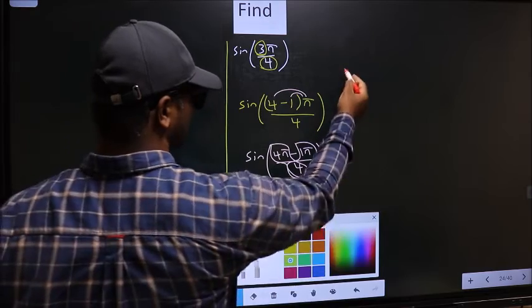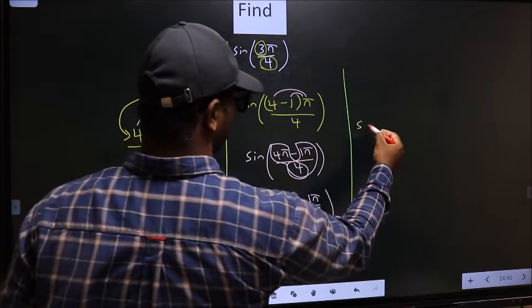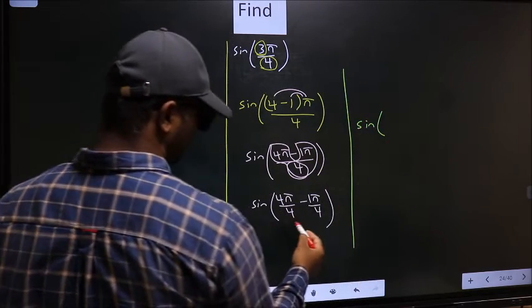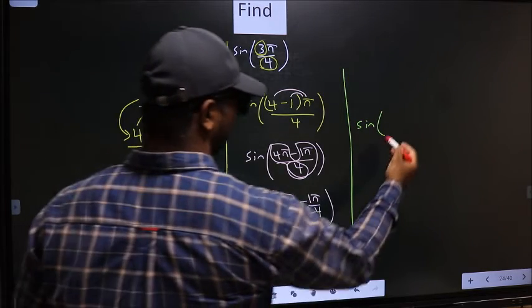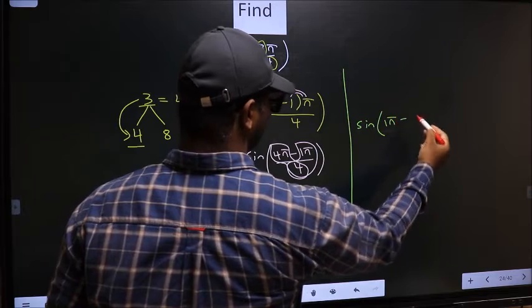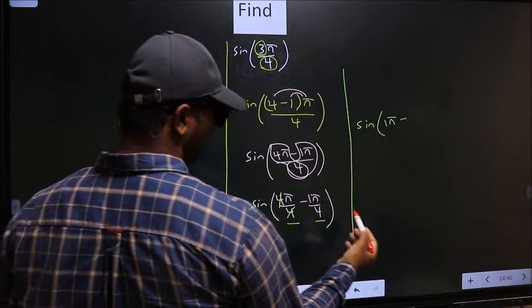Next, sin. Now here you should cancel 4. So we get 1π minus this angle, no change.